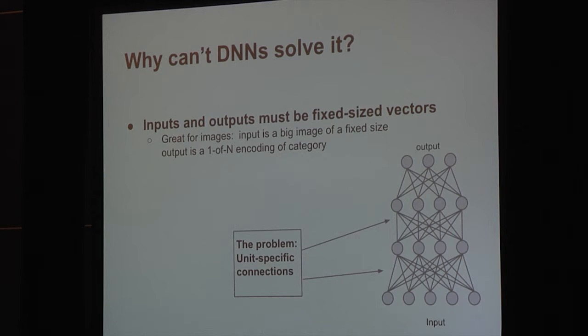So what's the problem with deep neural networks? How is it that deep neural networks cannot solve the sequence to sequence problem? The answer lies in the fact that different neurons have different connections. What it means is that the neural network doesn't have a good way of generalizing across temporal patterns. If you see a pattern in time in one time step, then you see it in a different time step, it looks totally different.